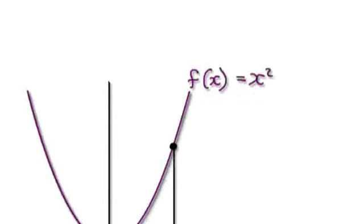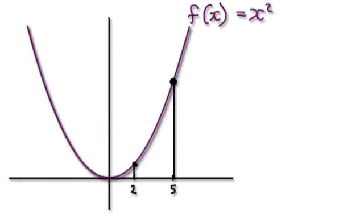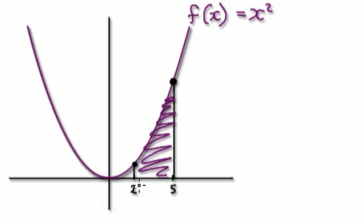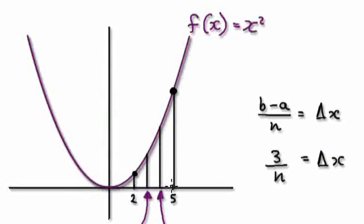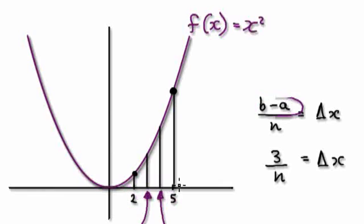Let me give you an example. Let's say you want to find out the area underneath the f equals x squared graph — specifically this area here between 2 and 5. The way we're going to do this is to get b minus a, which is 3. We then cut this length up into n number of strips.